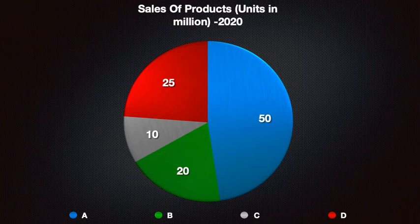Closely after that, product B with 20 million unit sales. The least popular in 2020 is product C with only 10 million unit sales.